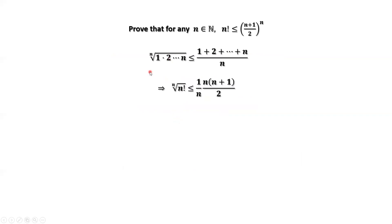The left-hand side is the nth root of n factorial. And 1 plus 2 plus 3 until plus n equals n times n plus 1 divided by 2. We also have to divide by n here, so this n and this n are cancelled out.